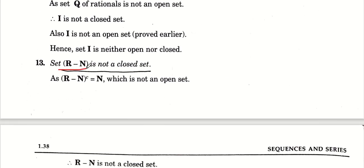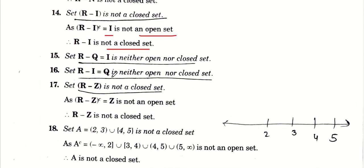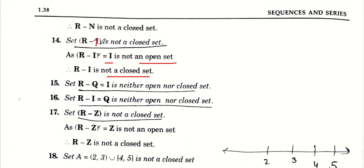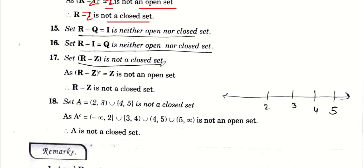R minus N का complement N है, जो open नहीं है, तो R-N closed set नहीं होगा। R minus I (set of irrational numbers) का complement irrational numbers आएंगे जो open set नहीं है, तो R-I भी closed set नहीं होगा। यहाँ थोड़ी misprinting है - यह result R minus Z के लिए होना चाहिए। R minus Z closed set नहीं है क्योंकि इसका complement Z बनेगा जो open set नहीं है।